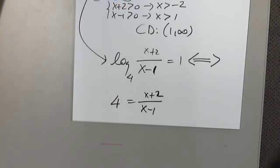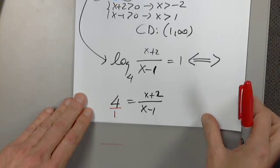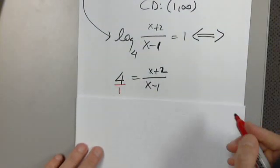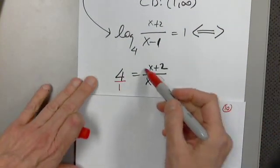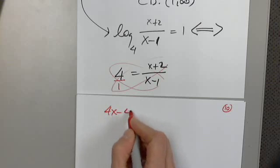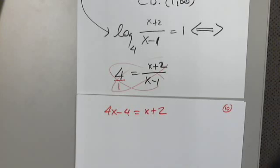Yes. And here's my hint for you. What am I getting at? What am I telling you here? Exactly. I'm telling you to cross multiply. Awesome. So let's cross multiply. What do we get when we cross multiply? 4x minus 4. Very good. Equals x plus 2. Very good. What type of equation is this now? It is linear. Correct.